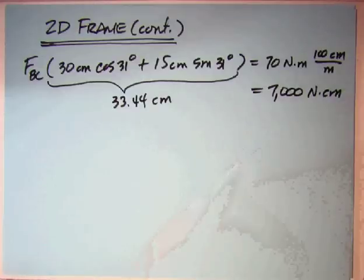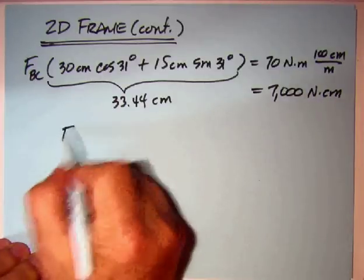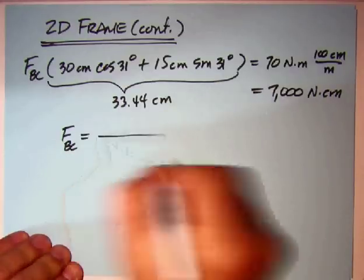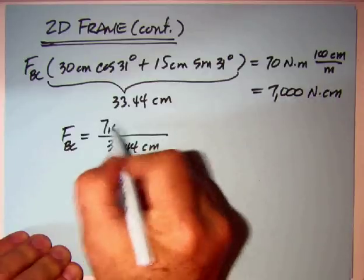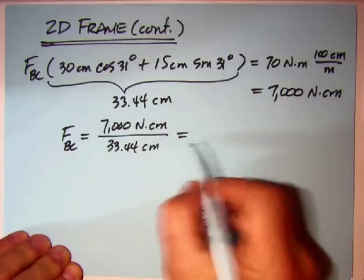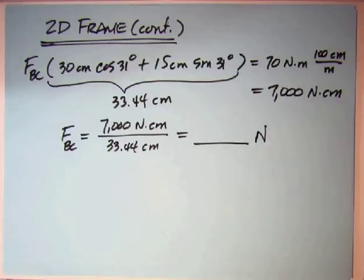As we get ready to do it, the centimeters will cancel, and we'll get an answer in newtons, which is what we're looking for. So if we do the algebra and the arithmetic, I like to put the 33.44 centimeters here, 7,000 newton-centimeters - watch units - come down and say my answer is going to be in newtons, and now check units. Do the algebra first, check units, make sure you've got the right units. If you don't have that, it really doesn't matter what number you come out with.